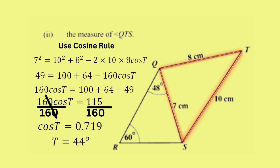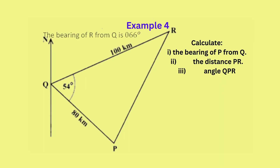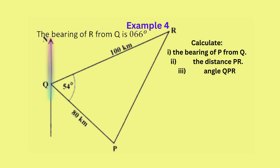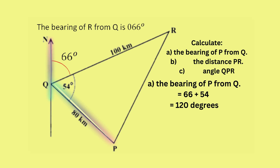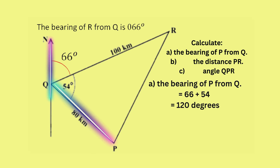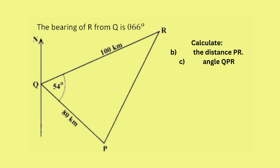Pressing shift, then cosine, then 0.719 gives angle T equals 44 degrees. For the bearings problem, the bearing of R from Q means we measure the angle from north of Q, placing 66 degrees between the line going to R and the north line of Q. For part a, the bearing of P from Q is the angle between the line going to P and the north of Q, which is 66 plus 54, giving 120 degrees in total.